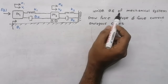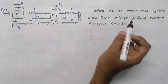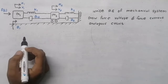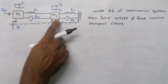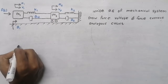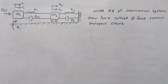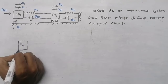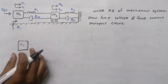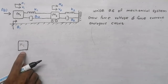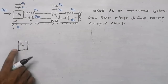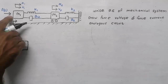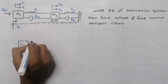First of all we need to write the differential equation of the mechanical system. When you get a question like this, the first procedure is to draw the free body diagram. Check how many masses are there — here there are two masses, m1 and m2. So first we draw the free body diagram of mass 1. We check if there is any applied force on mass m1 — and yes, there is an applied force f(t).